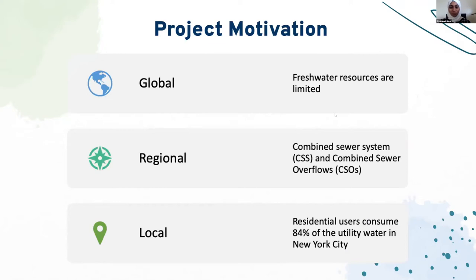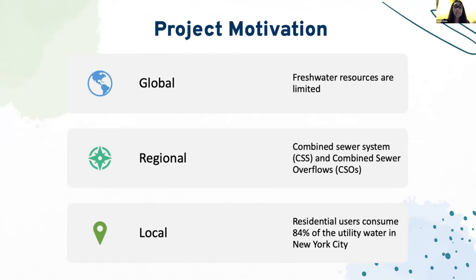Our project has been motivated by three predominant issues regarding water availability. First, globally, freshwater resources are scarce, and only about 1.2% of the water on Earth is accessible for human consumption, highlighting the issue of water scarcity. Next, regionally, combined sewer overflows from combined sewer systems releasing contaminants directly into waterways due to outdated wastewater infrastructure causes a substantial amount of water pollution in vital waterways. And finally, locally, focusing on New York City, residential water usage is 84% of the total utility water consumption, and we are motivated to explore ways of minimizing this.